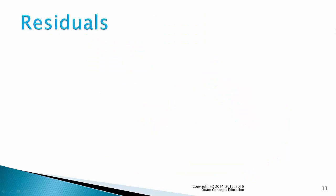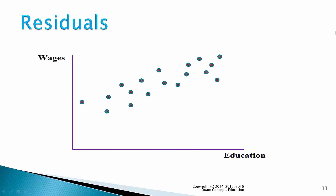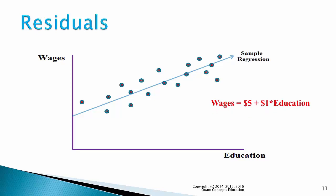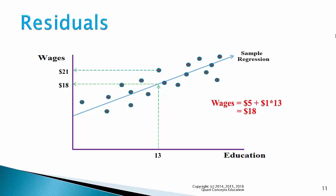Time for a quick refresher on residuals. Suppose we have our scatter graph of our sample of respondents and we fit a sample regression line. Suppose the sample regression equation is as follows. Let's make a prediction for one of our respondents, Sally, who has 13 years of education. Based on our regression line, this person is expected to earn a wage of $18 — we substitute 13 for education: 5 plus 1 times 13 equals $18. However, Sally's actual wage lies above our prediction — she actually earns $21 per hour. This error in our regression model's estimate is known as the residual, calculated as the actual wage minus the predicted wage. So Sally's residual is 21 minus 18, which is $3.